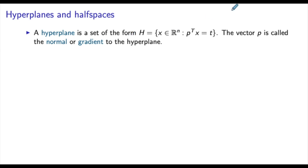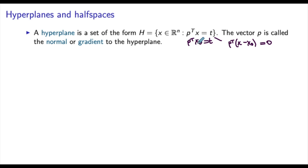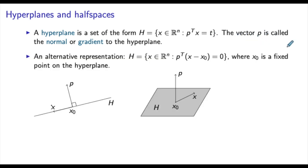We can alternatively represent the hyperplane by taking a point through which the hyperplane passes. If x0 is such that p transposed x0 equals t, so x0 belongs to the hyperplane, then we can equivalently write p transposed times (x minus x0) equals 0. This is an equivalent representation: the hyperplane is the set of x such that p transposed times (x minus x0) equals 0, where x0 is an arbitrary fixed point belonging to the hyperplane.